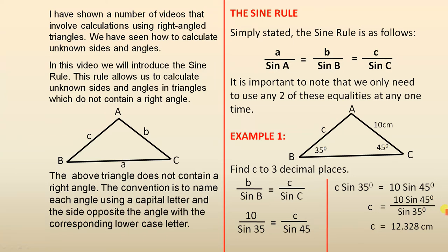The above triangle does not contain a right angle. The convention is to name each angle using a capital letter. So there is angle A with a capital A, angle B with a capital B, and angle C with a capital C.